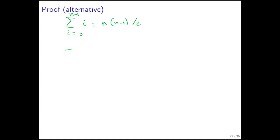Now notice that the sum from i equal to 0 to n minus 1, of i, is equal to 0 plus 1 plus dot dot dot plus n minus 2 plus n minus 1.